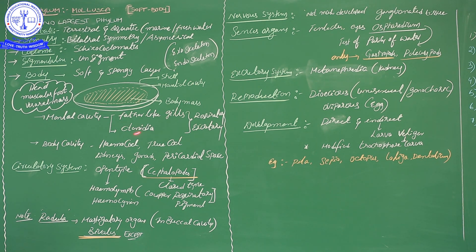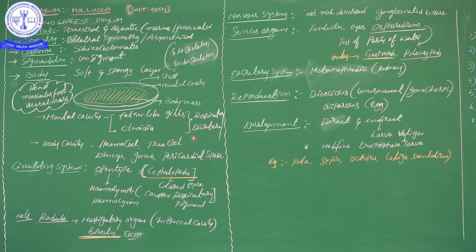The mantle cavity contains feather-like gills and ctenidia. These gills and ctenidia play an important role in both respiration and excretion. When water passes through the gills, oxygen is exchanged into the body, and simultaneously nitrogenous waste material is eliminated through the ctenidia and feather-like gills.